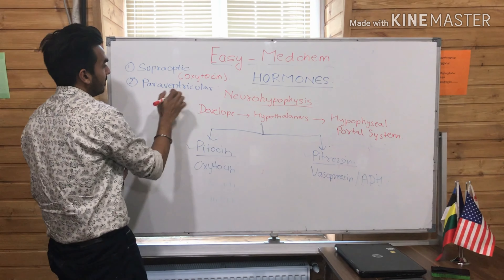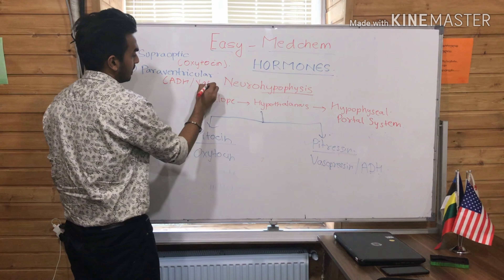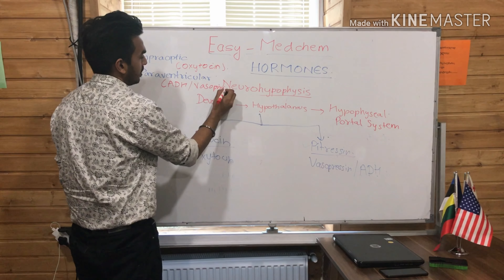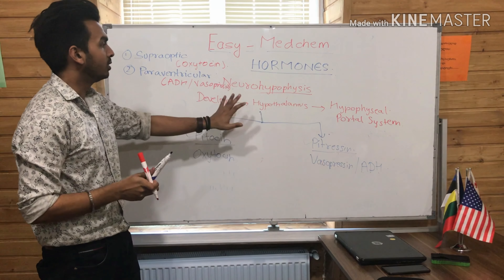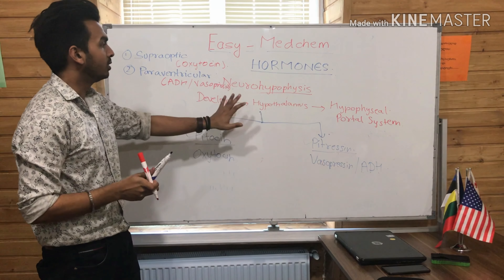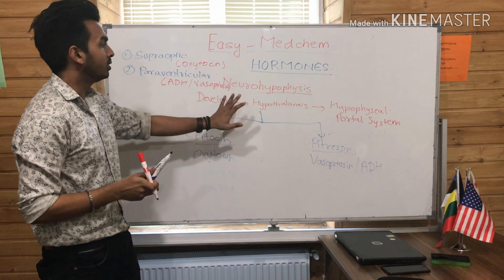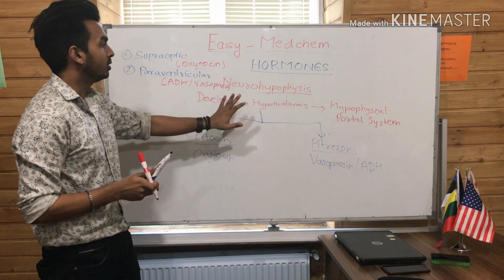The first nucleus is the supraoptic nuclei, and the second is the paraventricular nuclei. The supraoptic nuclei is responsible for the secretion of Oxytocin, while the paraventricular nuclei is responsible for the secretion of ADH or Vasopressin.